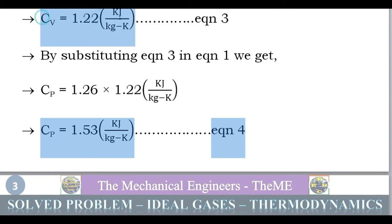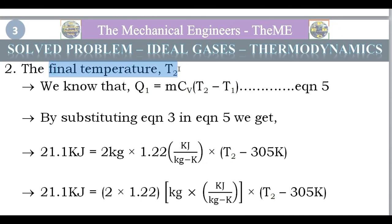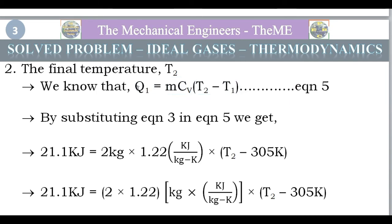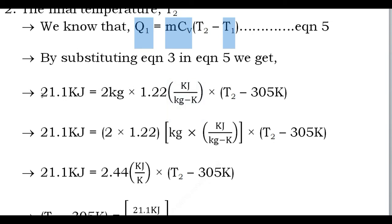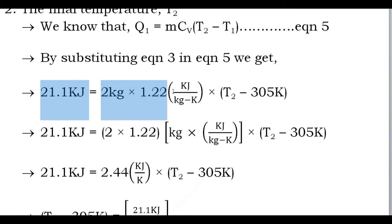Now we can find the final temperature T2. We use the formula for heat added at constant volume: Q = M·Cv·(T2 − T1). We know Q = 21.1 kJ, M = 2 kg, Cv = 1.22 kJ/kg·K, T1 = 305 K. Substituting: 21.1 = 2 × 1.22 × (T2 − 305).